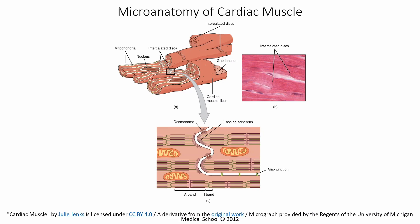Looking at the microanatomy of cardiac muscle at the individual cell level: cardiac muscle cells branch out and join together at the intercalated discs. A key focus here is the gap junctions found at these discs. Gap junctions create a tunnel from one cell to another, allowing electrical signals to rapidly communicate directly through the channel rather than requiring a chemical signal to cross the gap between cells.